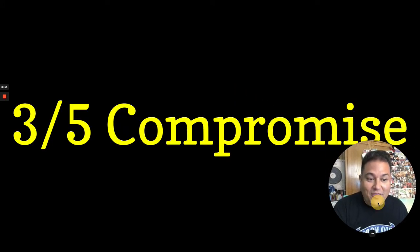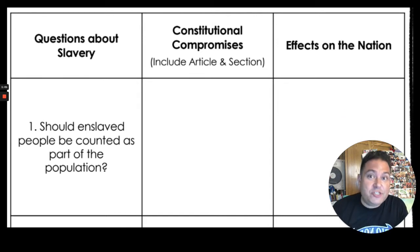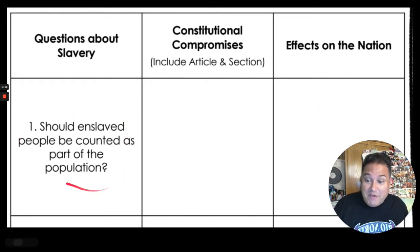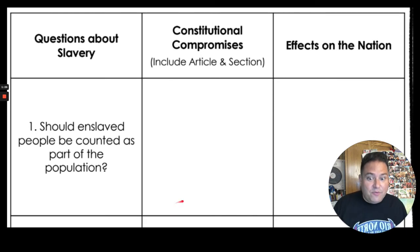Let's start with the three-fifths compromise. I'm not necessarily going to give you the definition, but I'm going to tell you where to find the definition because you've already learned this. Your definition for the three-fifths compromise is the answer to this question: should enslaved people be counted as part of the population, and how did the Constitution deal with that? They dealt with it with the three-fifths compromise. If you look at this handout and what you put in this box right here, that is the three-fifths compromise.